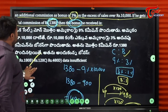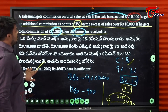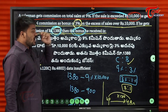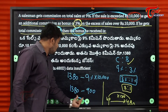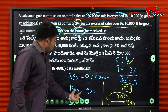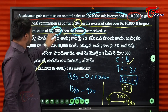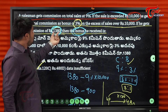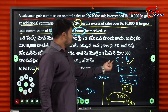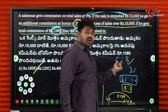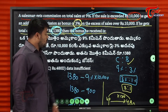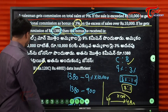The total commission was 1,380. We subtract 9% of 10,000, which is 900, leaving 480. This 480 covers both the additional commission and the bonus in a 3 to 1 ratio, giving 4 total parts. One part is the bonus: 480 divided by 4 equals 120 rupees.